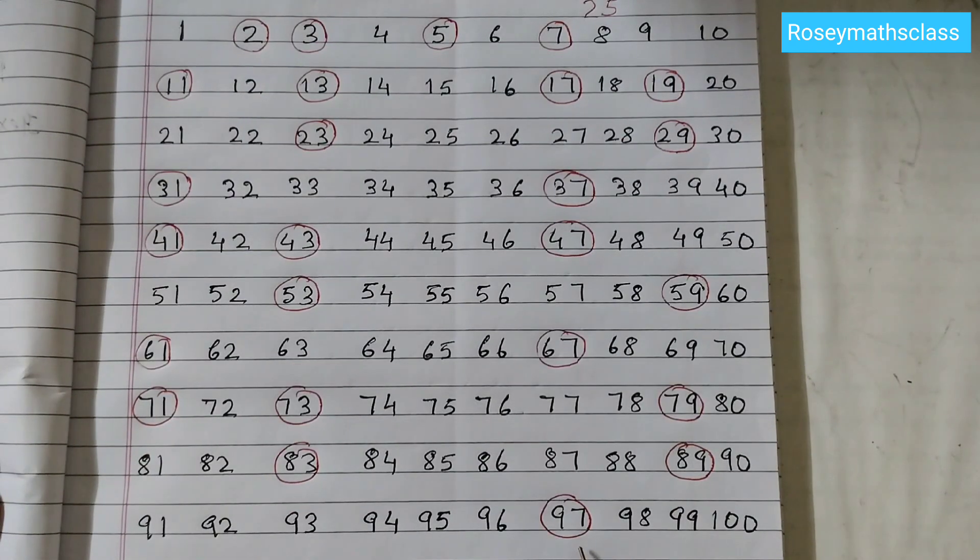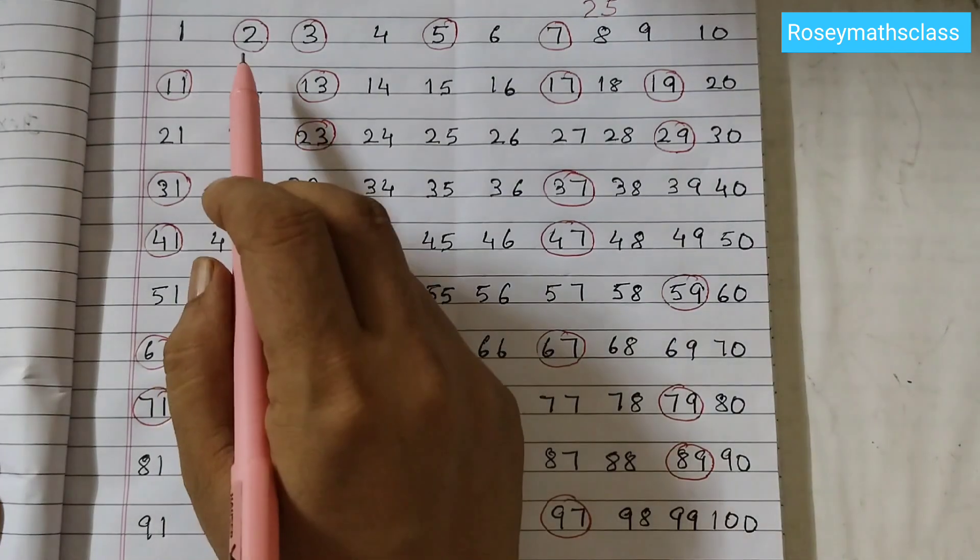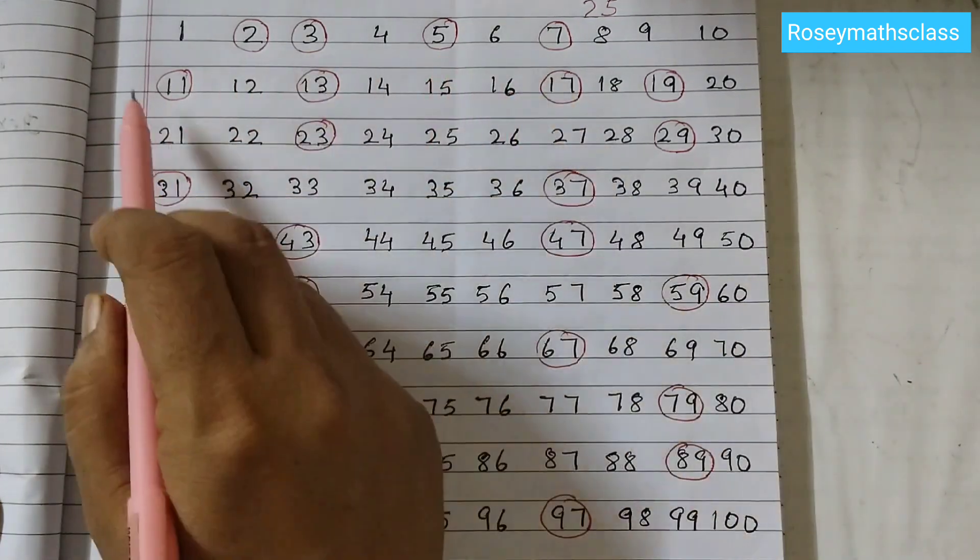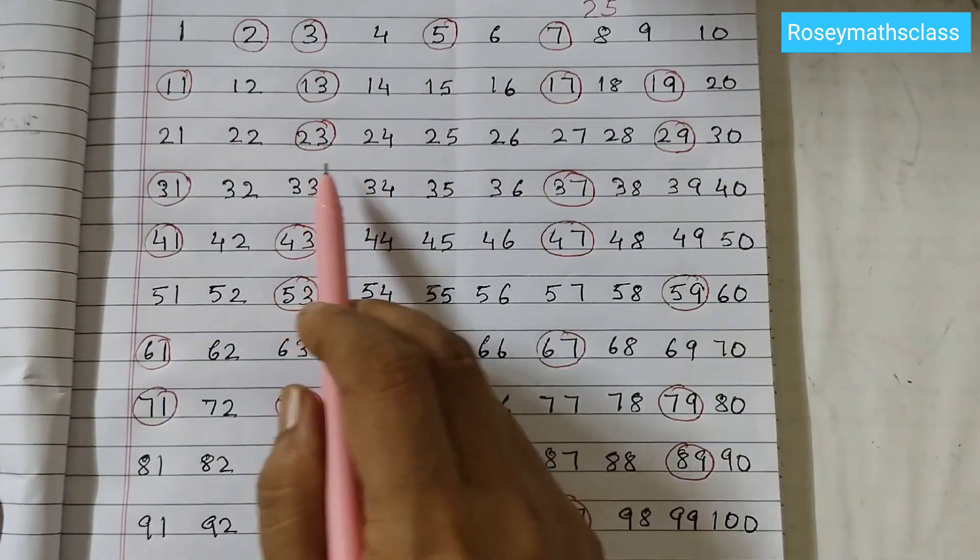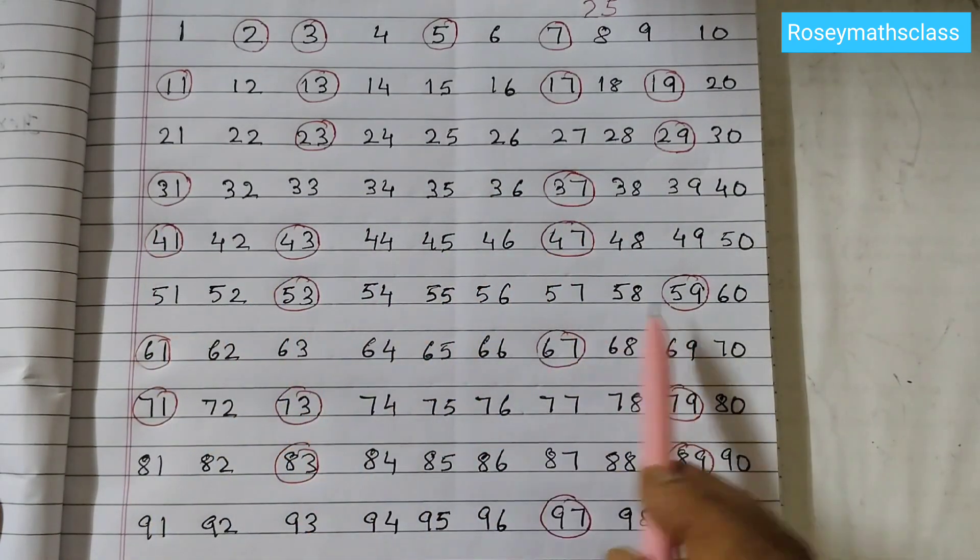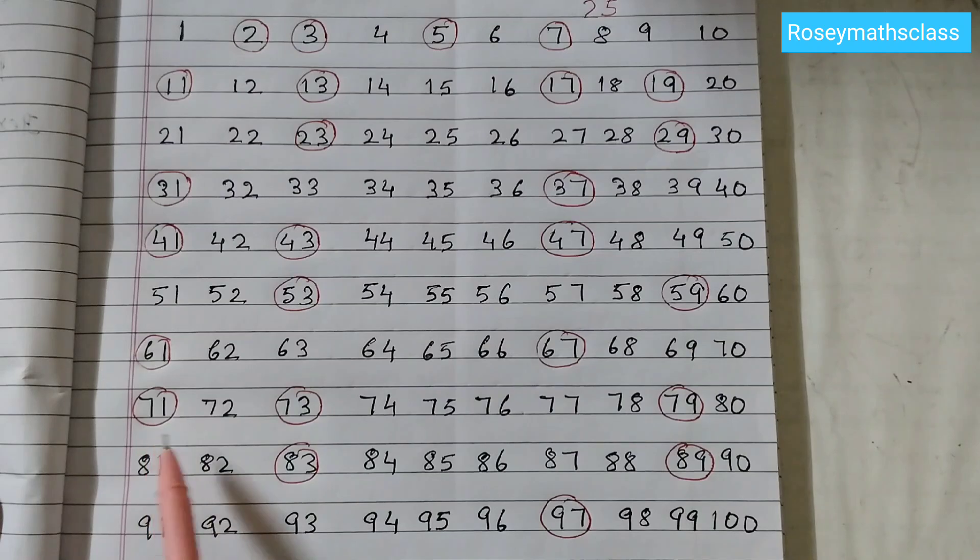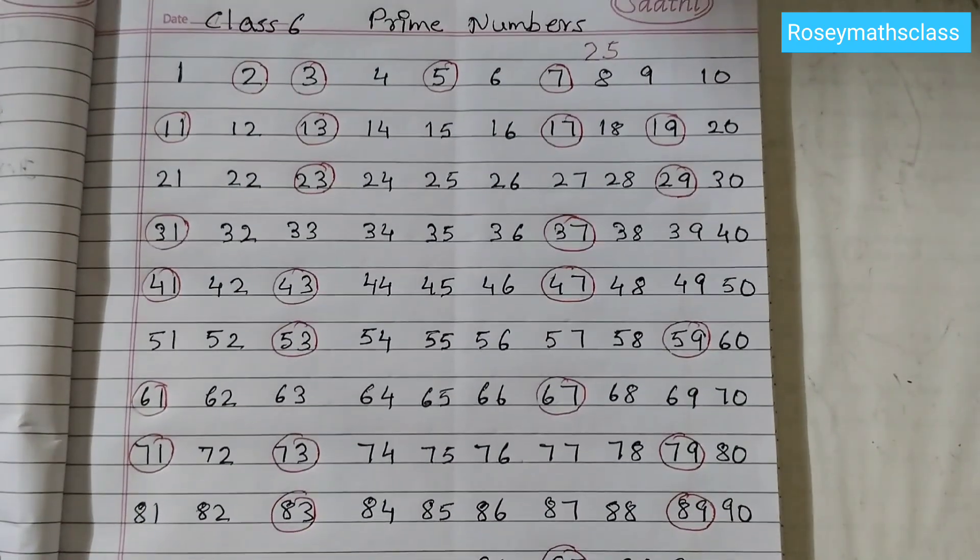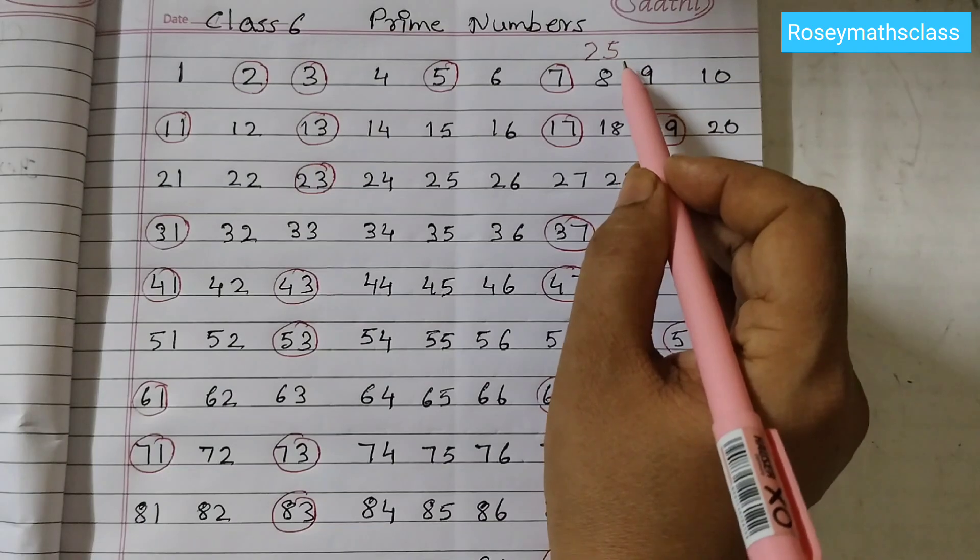And when we count these numbers: 1, 2, 3, 4, 5, 6, 7, 8, 9, 10, 11, 12, 13, 14, 15, 16, 17, 18, 19, 20, 21, 22, 23, 24, 25. In total there are 25 prime numbers between 1 to 100.